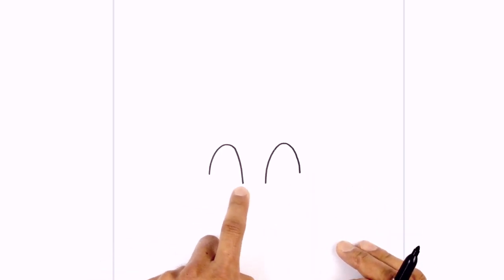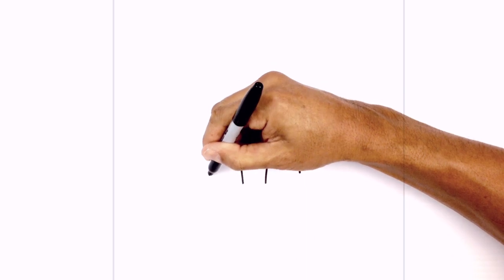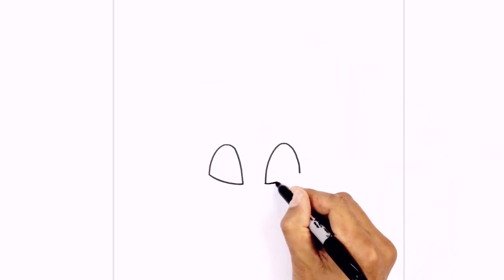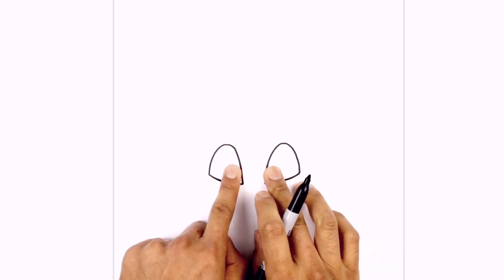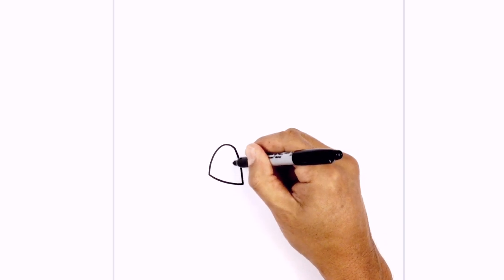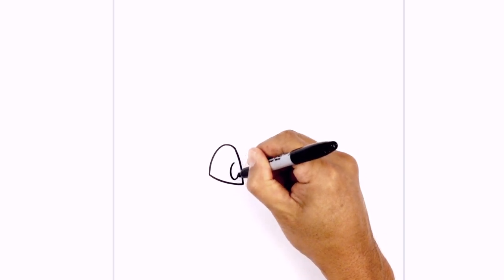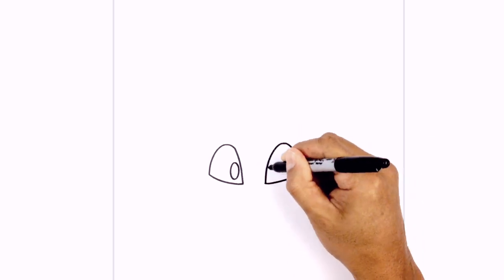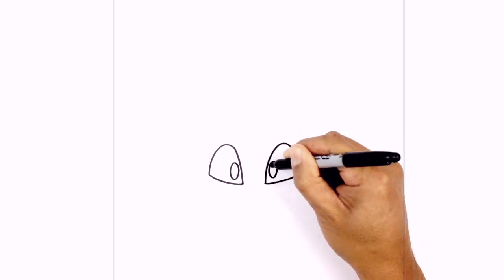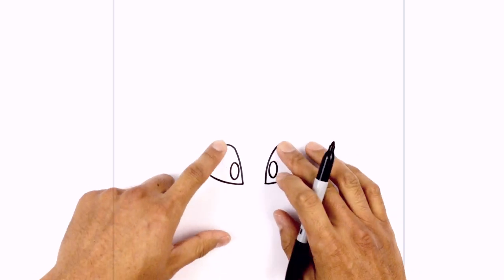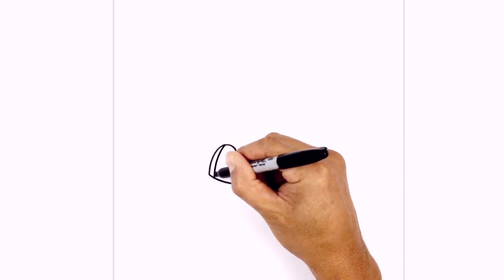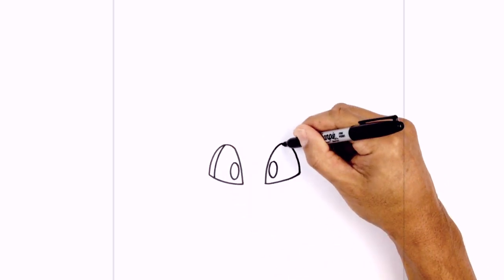Now we're going to connect the outside to the inside with a curve, and then on the inside edge of the eyes we're gonna draw two small ovals for the pupils — starting from the top, around and back up. Do the same thing on the right side. Now I'm gonna give the eyes some depth, so we're gonna start at the very top on the left side and curve it down towards the bottom. Do the same thing on the right.